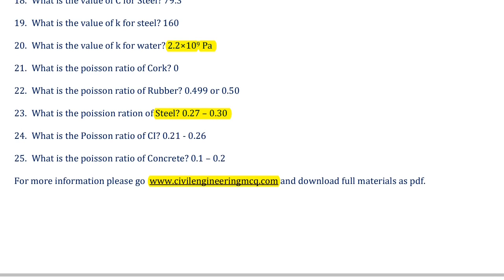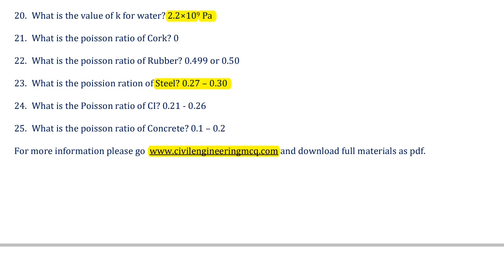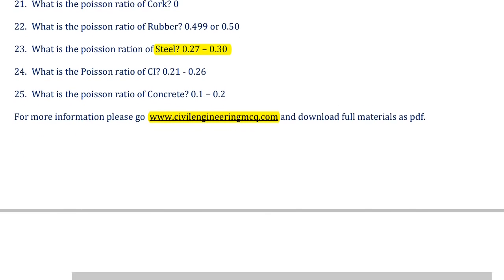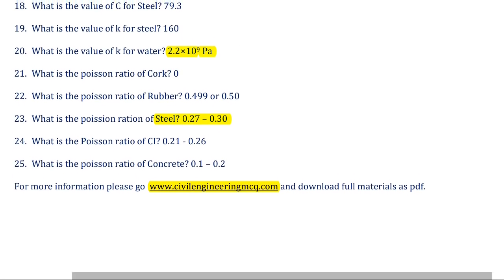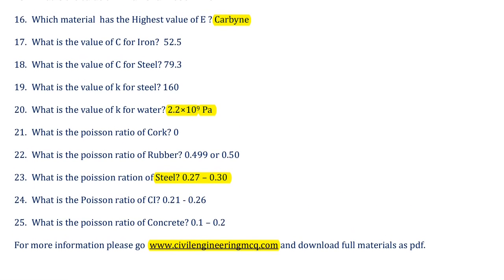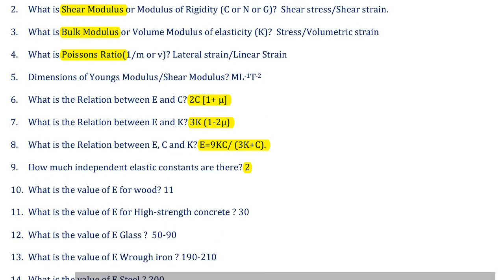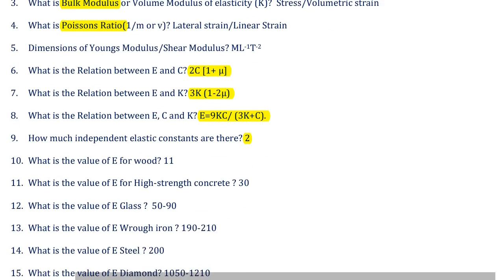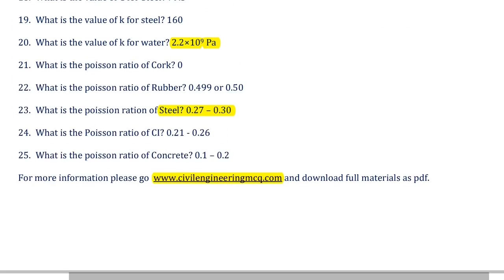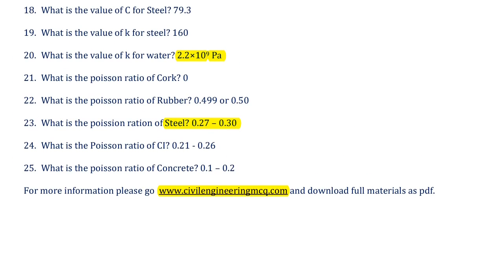What is the Poisson ratio of cast iron? It is 0.21 to 0.26. And what is the Poisson ratio of concrete? It is 0.12 to 0.2. Please learn these numerical values thoroughly — MCQ questions may be expected on these values, their relationships, and their definitions. For more material, visit www.civilengineeringmcq.com to download this material as a PDF.